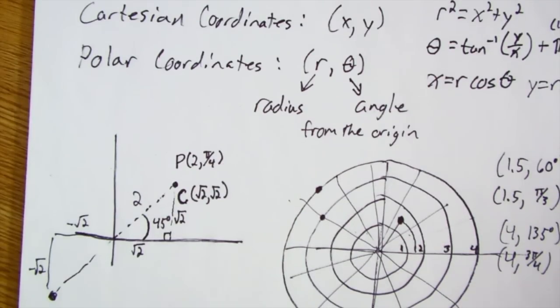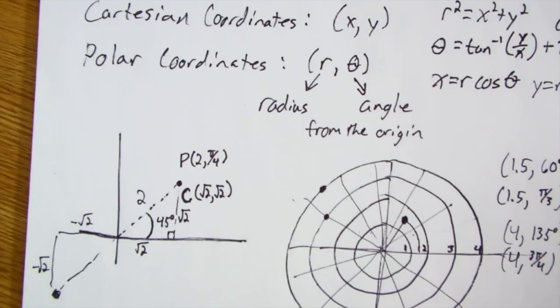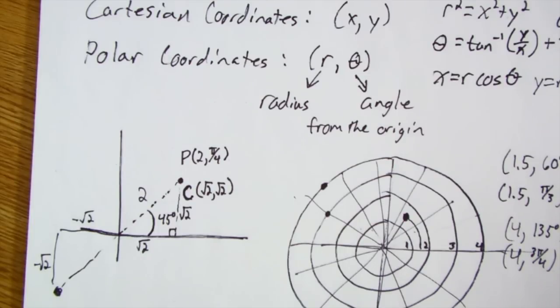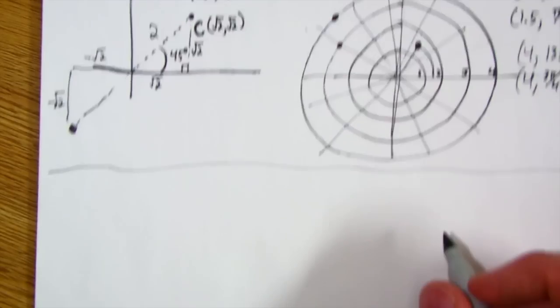I hope that gives you a little bit of an idea of what polar coordinates are in general. So let's do two things. Let's try and go from polar to Cartesian coordinates, and then let's try to go from Cartesian to polar coordinates. And I think if you get that, that'll help a lot.